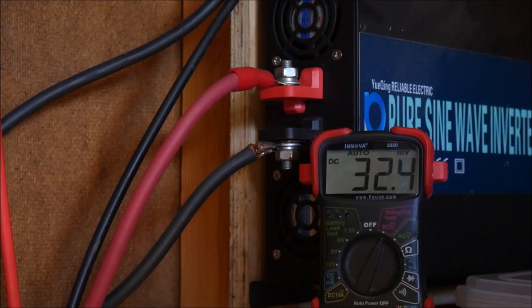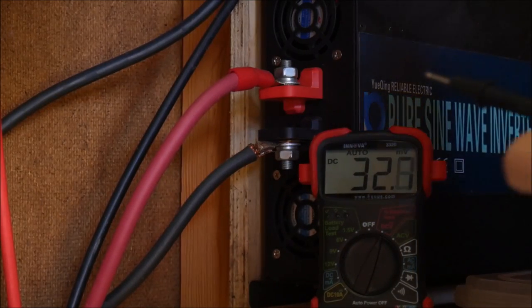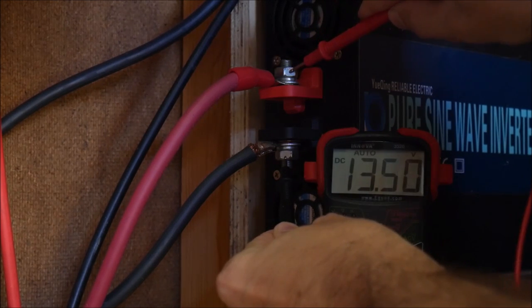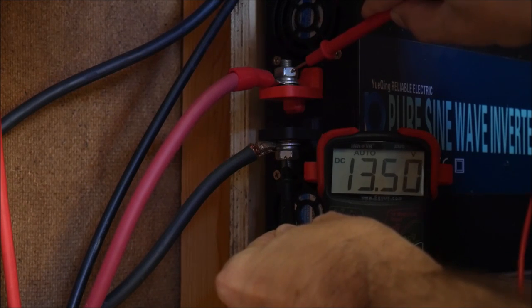You could also test the voltage at the inverter terminals and compare that voltage with what you are seeing at the battery bank. If there's a significant difference you know there's something in between possibly a switch or junction block or the wires themselves that's causing a problem.